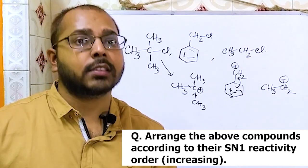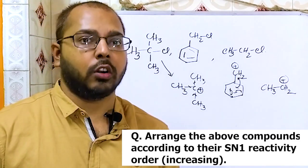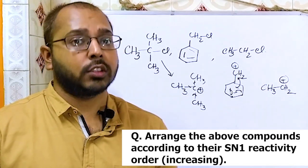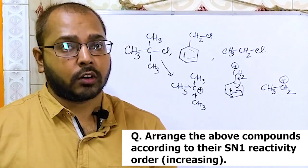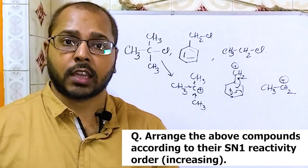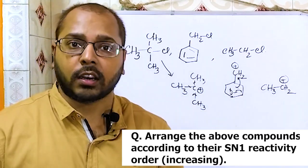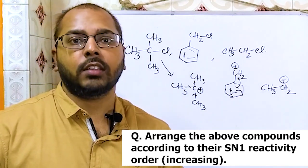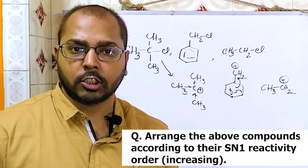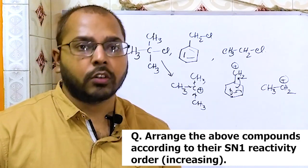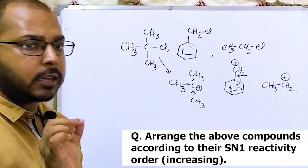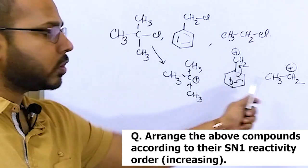If resonance is taking place, that carbocation's stability will be even greater than 3-degree. If 3-degree has no resonance, then the benzyl carbocation is the most stable among these three.